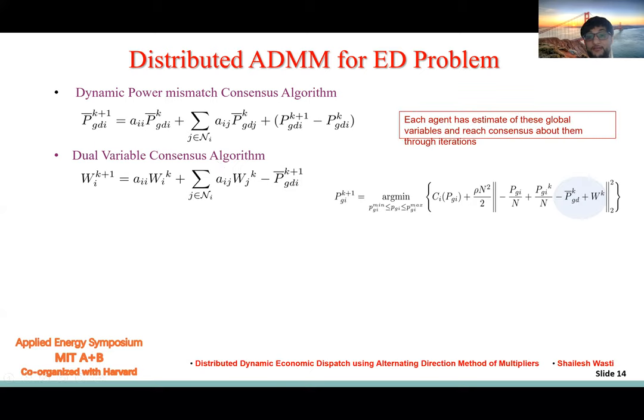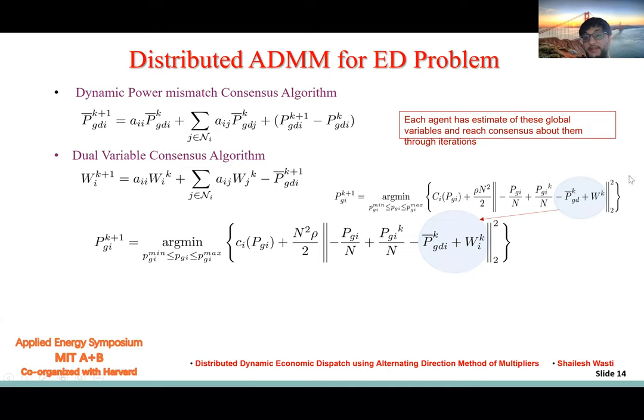Now the problem changes from a decentralized setting to a distributed setting. These two variables were global here, and now it's local. So it now no longer needs that dual updater.